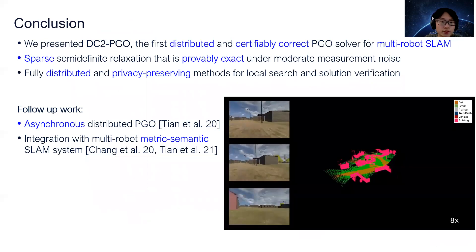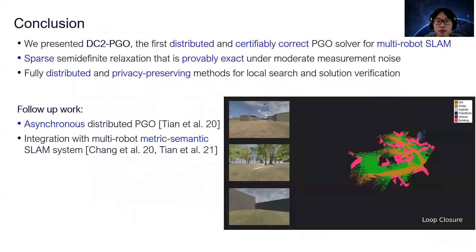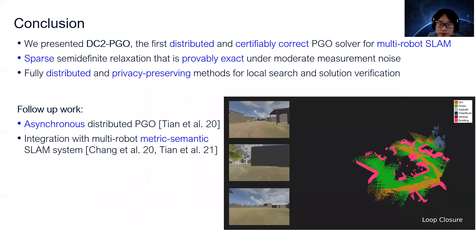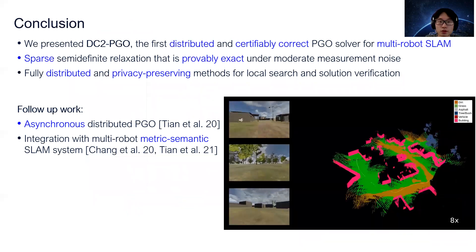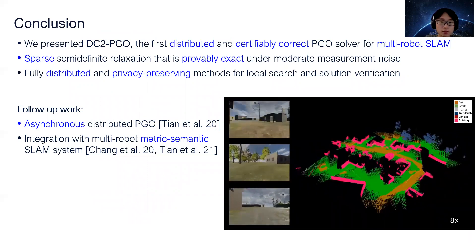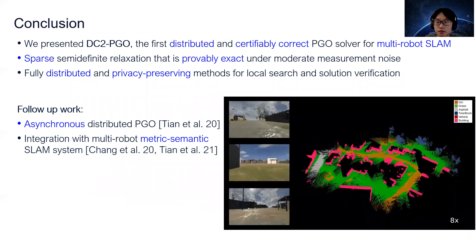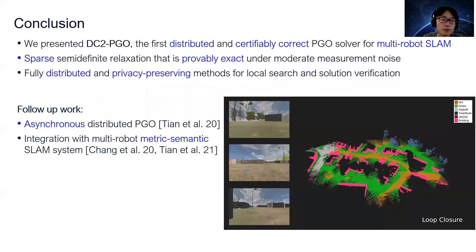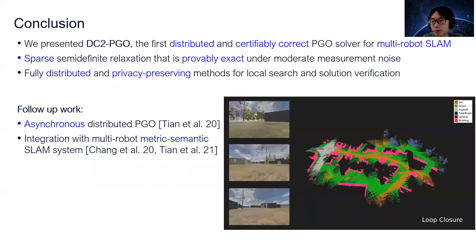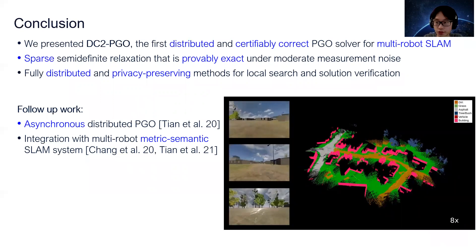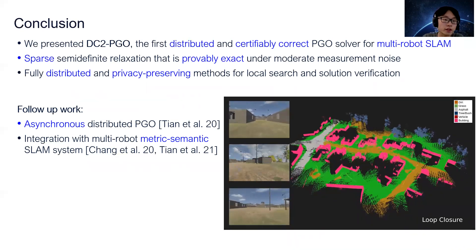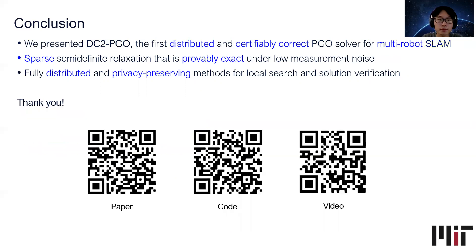In conclusion, we presented DC2PGO, the first distributed and certifiably correct PGO solver for multi-robot SLAM. We proved that our sparse semi-definite relaxation is provably exact under moderate measurement noise, and we proposed fully distributed and privacy-preserving methods for local search and distributed solution verification. We invite you to check out our follow-up work, where we extend distributed optimization to an asynchronous communication regime, and our latest work integrating DC2PGO with a full multi-robot metric-semantic SLAM system. Thank you.